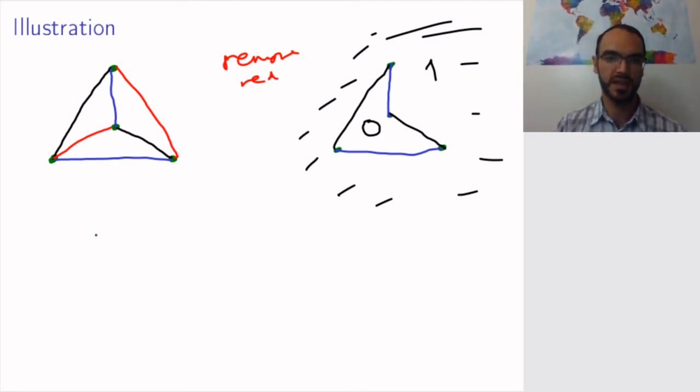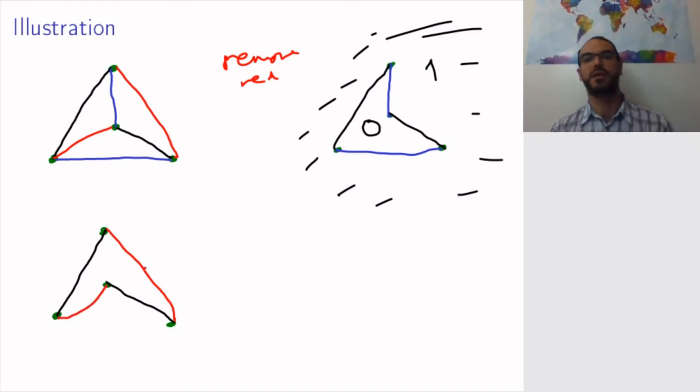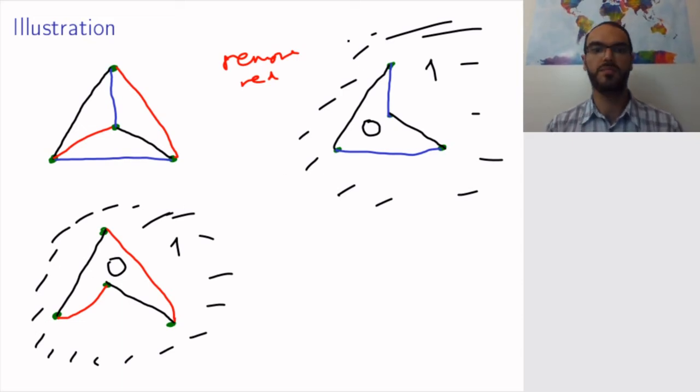Then I do the same thing, but instead of removing the red edges, I remove the blue edges. So, now I still have my black edges. But now my red edges are back and I have removed the blue edges. And now I, again, color these two faces somehow. Maybe I color this one 0 and this one 1. So, here we go.